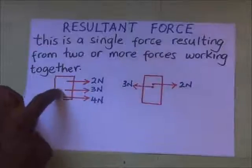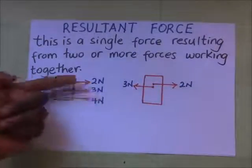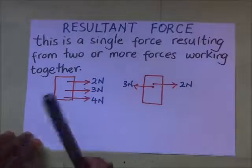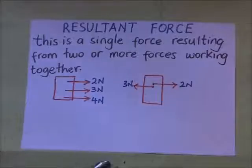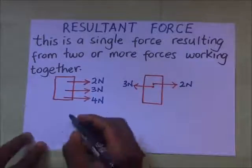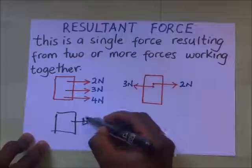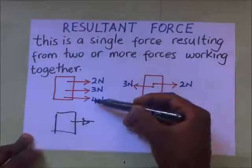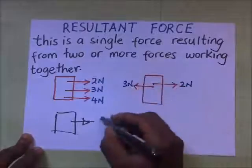Consider this body with many forces acting on it in one direction. The resultant force is the single force acting as a result of all of them. If we draw that diagram, the single force acting in that direction as a result of all these forces is going to be 4 plus 3, that is 7, plus 2 — giving us 9 newtons.